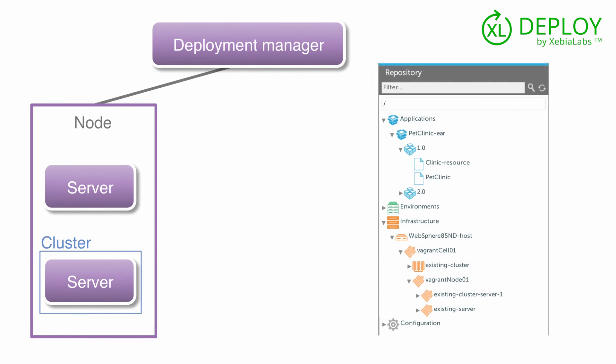In Excel Deploy, your application is contained in a deployment package. This package contains the EAR file, resource specifications, and any other artifacts or resources that are needed. In Excel Deploy terminology, the artifacts and resources in a deployment package are called deployables.